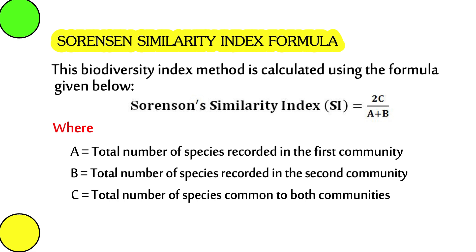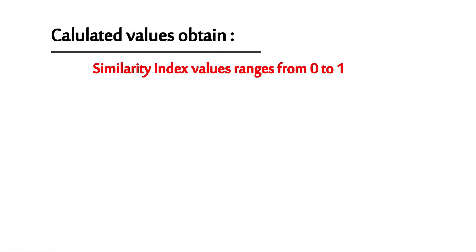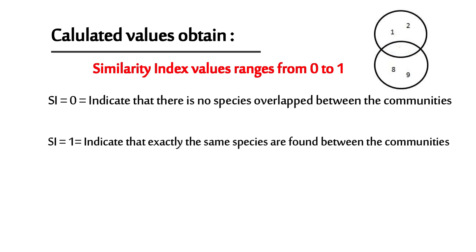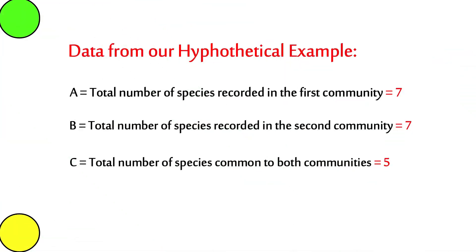After calculation, the final value obtained will fall in the range of zero to one. If the similarity index value equals zero, it indicates there is no species overlap between the two communities studied. If the similarity index equals one, it indicates that the species found in both communities are exactly the same.